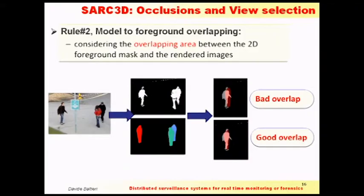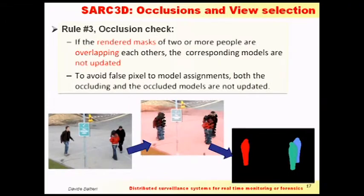The second rule deals with positioning and measures how reliable the positioning of the model on the image was. It measures the overlap between the real foreground mask of the camera and a 3D rendering of the SARC3D model positioned on the estimated position. If there is good overlap between the two, we select that frame; otherwise we discard it. The third rule measures the presence of occlusion — it works fully in 3D using the SARC3D rendering, and detects when two rendering tasks write the same pixel, meaning there was an occlusion, so we discard that frame.